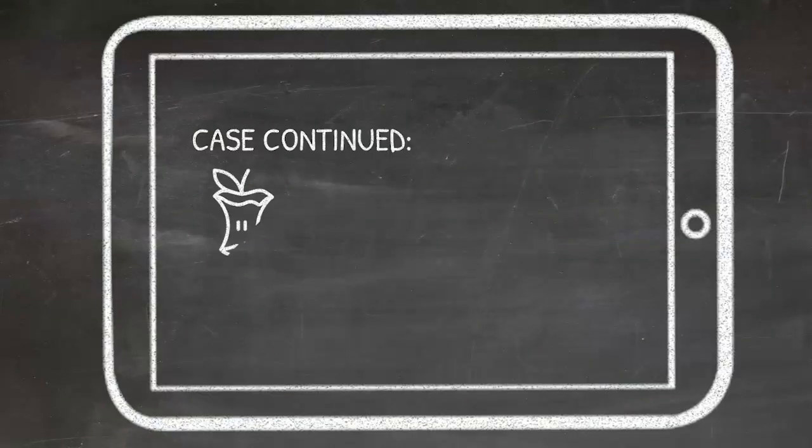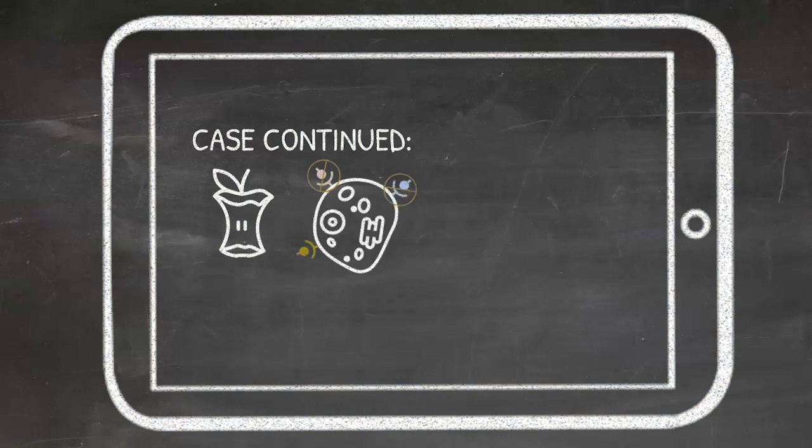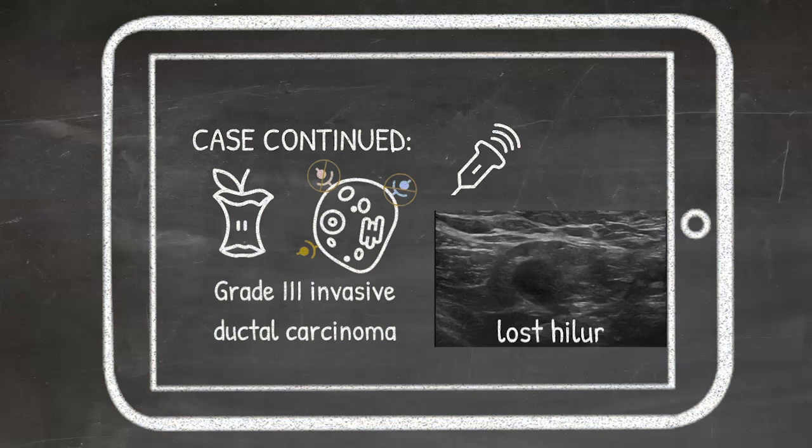We get a core needle biopsy, and the results come back and show a grade three invasive ductal carcinoma of the breast that's ER and PR negative and HER2 positive. Ultrasound of the axilla, which is a reminder as a part of the diagnostic mammogram, shows a suspicious enlarged lymph node with loss of the lymph node hilum and a thickened cortex measuring two centimeters. What do we do next?